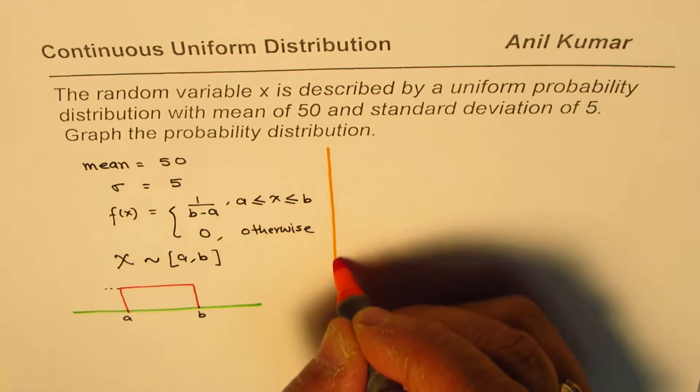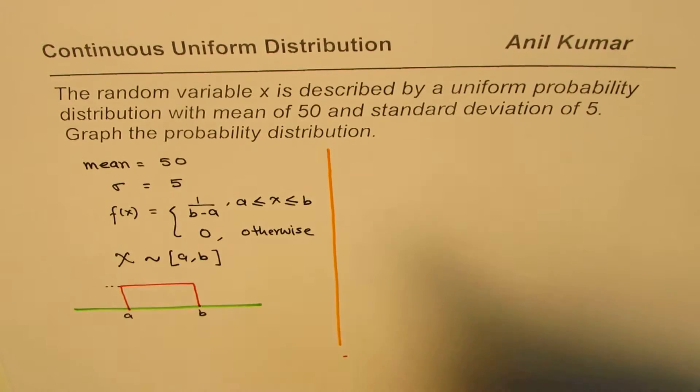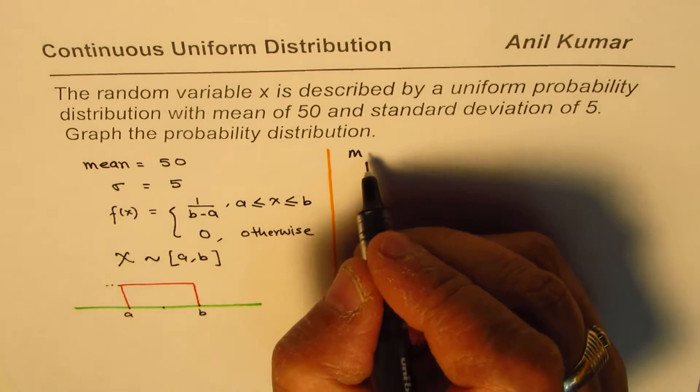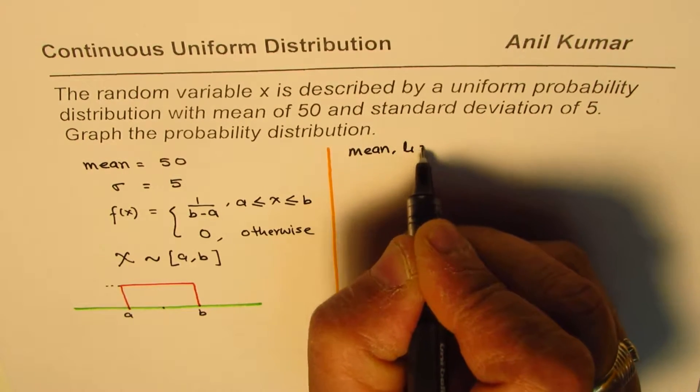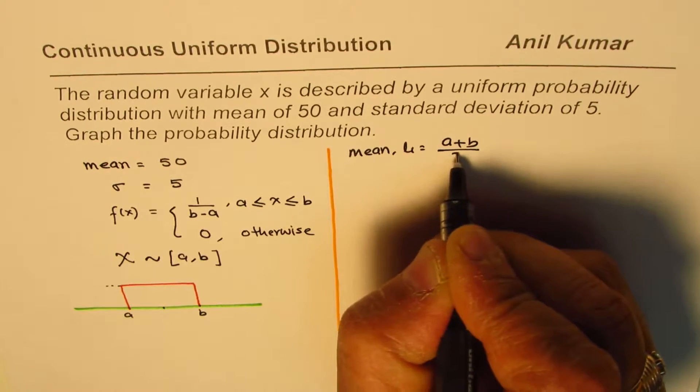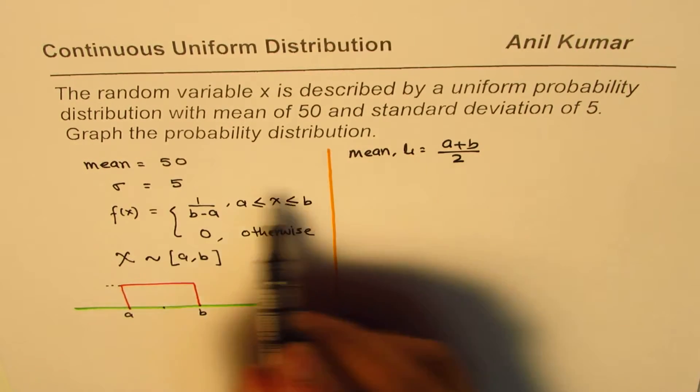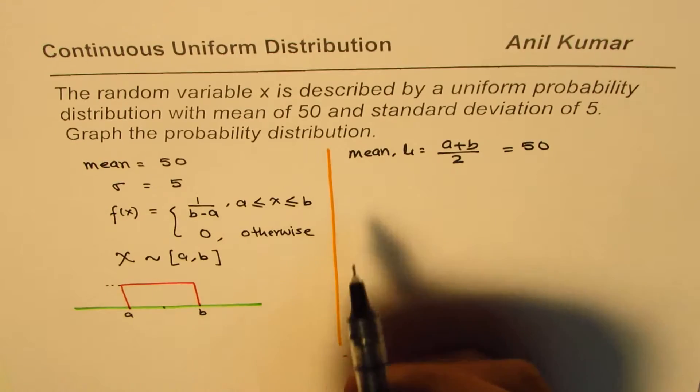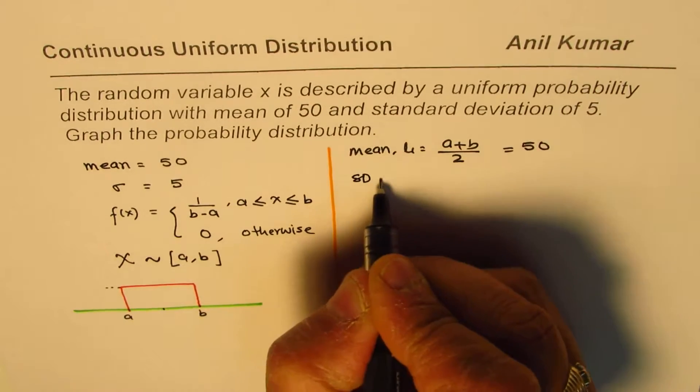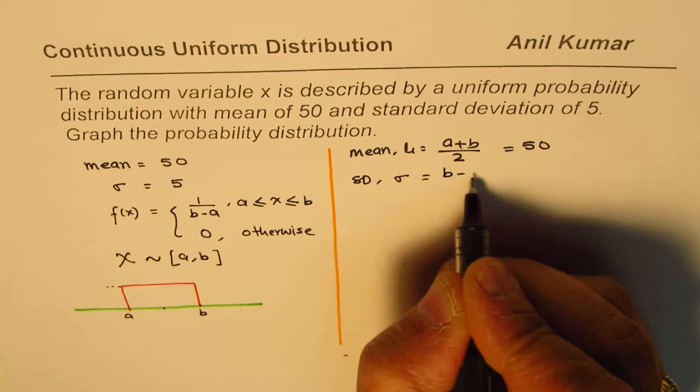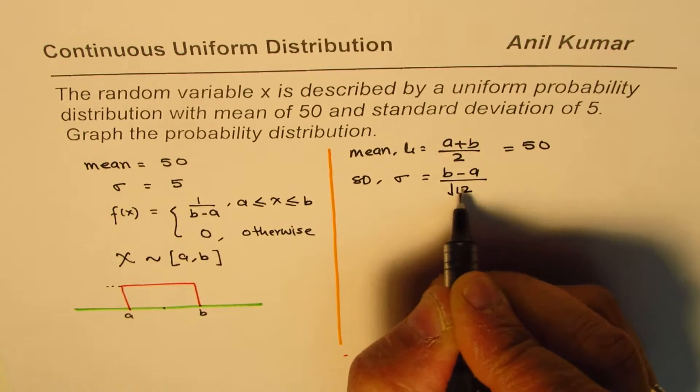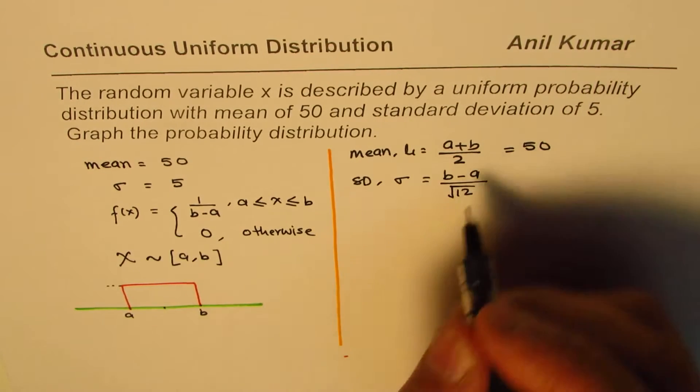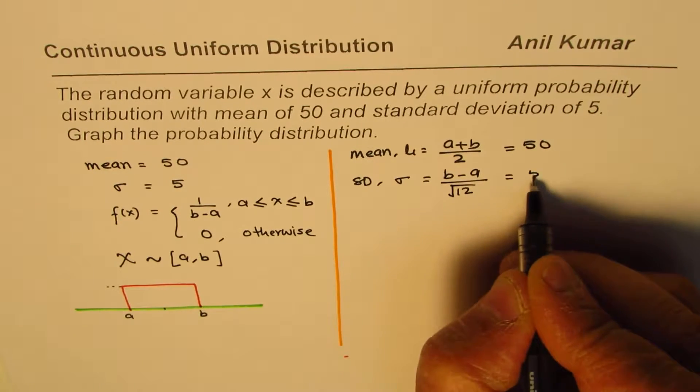So what is the formula for mean? The formula for mean in this particular case is just the average value, center value. So we can say mean or mu equals to a plus b divided by 2. So this a plus b divided by 2 is equal to 50. And what is the formula for standard deviation? Standard deviation sigma equals b minus a divided by square root of 12. And this standard deviation is given to us as 5.